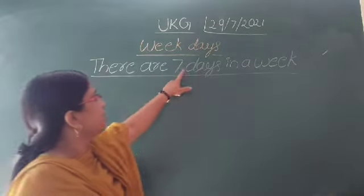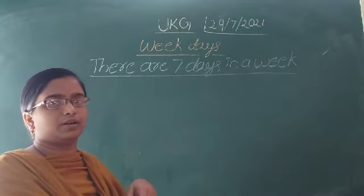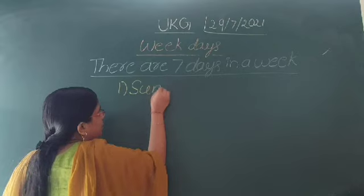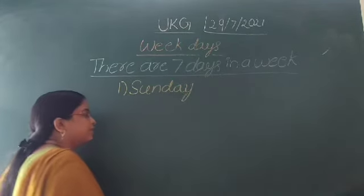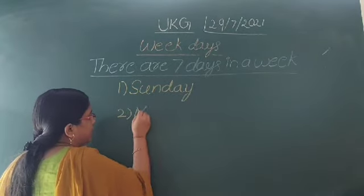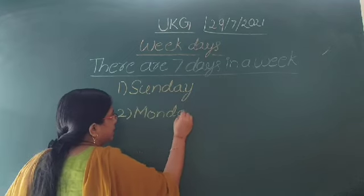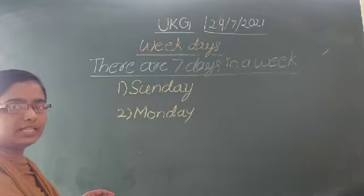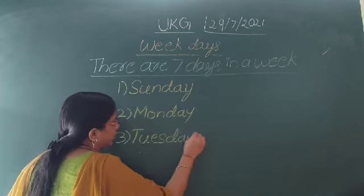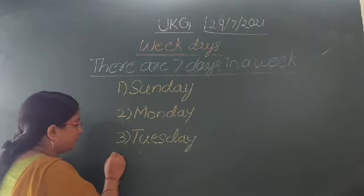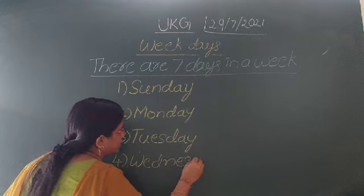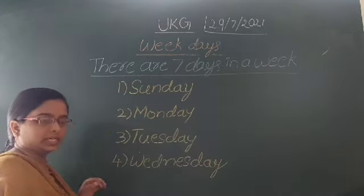There are seven days in a week. Which are those? The first day is Sunday. Sunday. The next one is Monday. The third one is Tuesday. Tuesday. Wednesday. Wednesday.